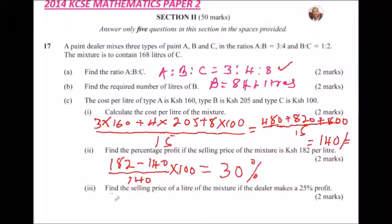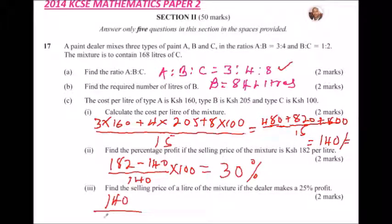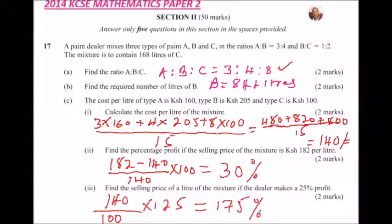Roman numeral three: find the selling price of a liter of the mixture if the dealer makes a 25% profit. Since the production cost of 140 Ksh represents 100%, a 25% profit means we calculate 125% of 140: 140 ÷ 100 × 125 = 175 Kenyan Shillings. So the selling price at 25% profit is 175 Ksh per liter.